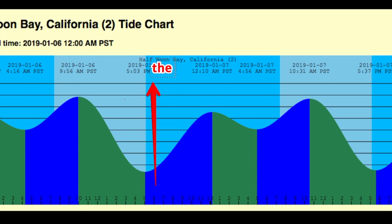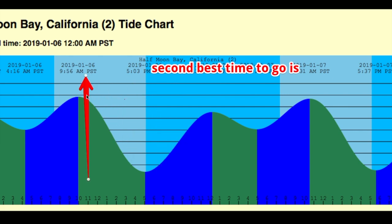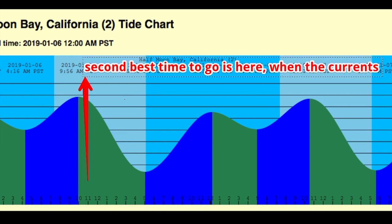Basically the slack of that high tide point. Then the second best time to go would be from high tide going down to low tide — that's another slack. There's a good hour window right when the current starts going down. I would say that's the second best time to go fishing.